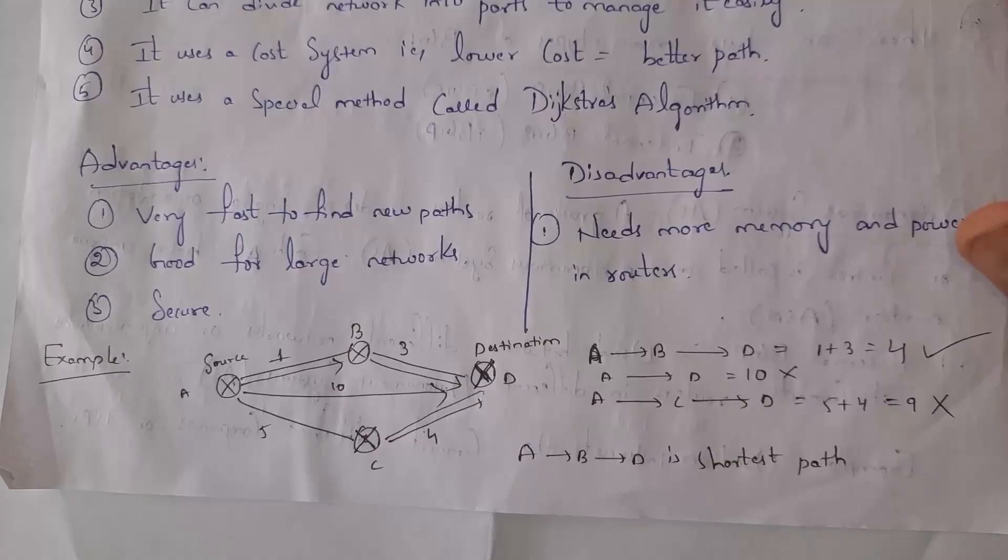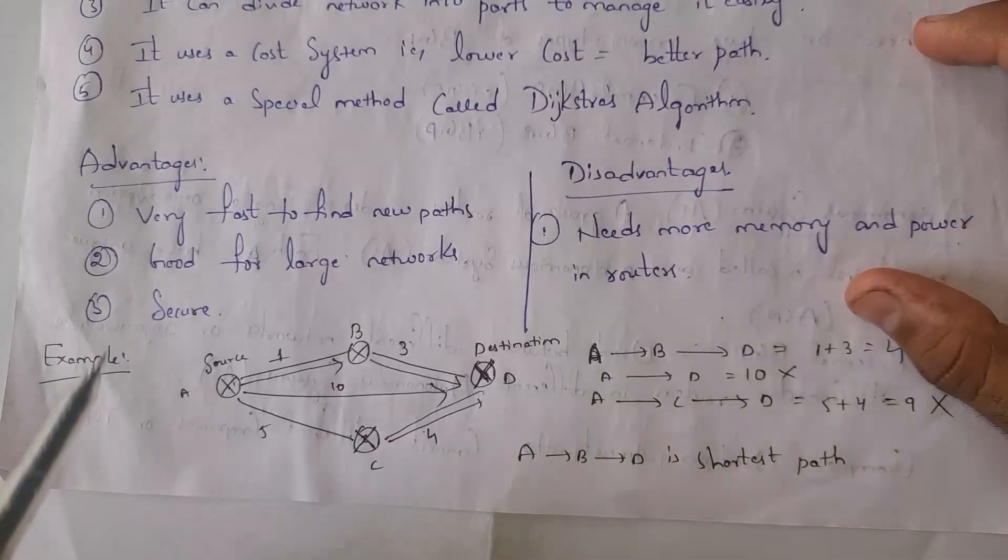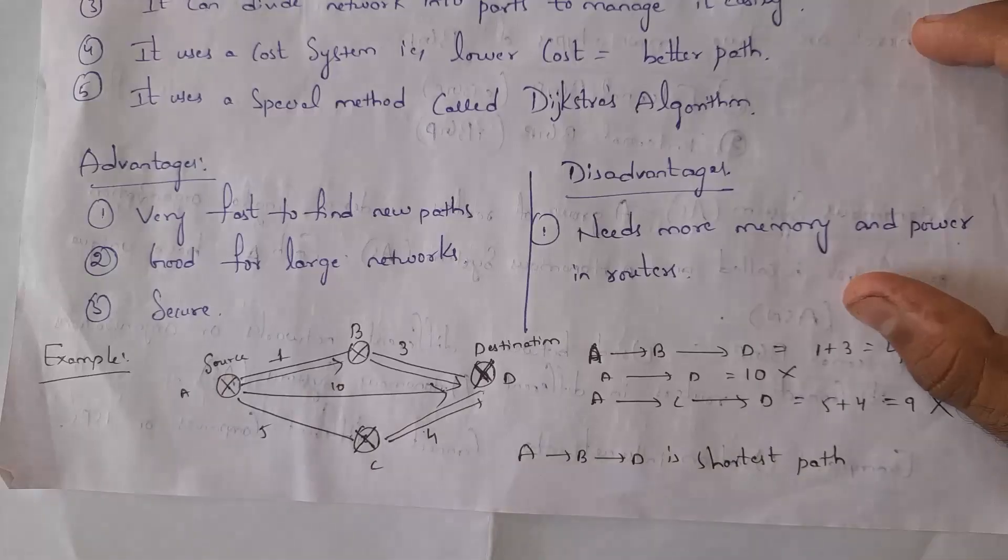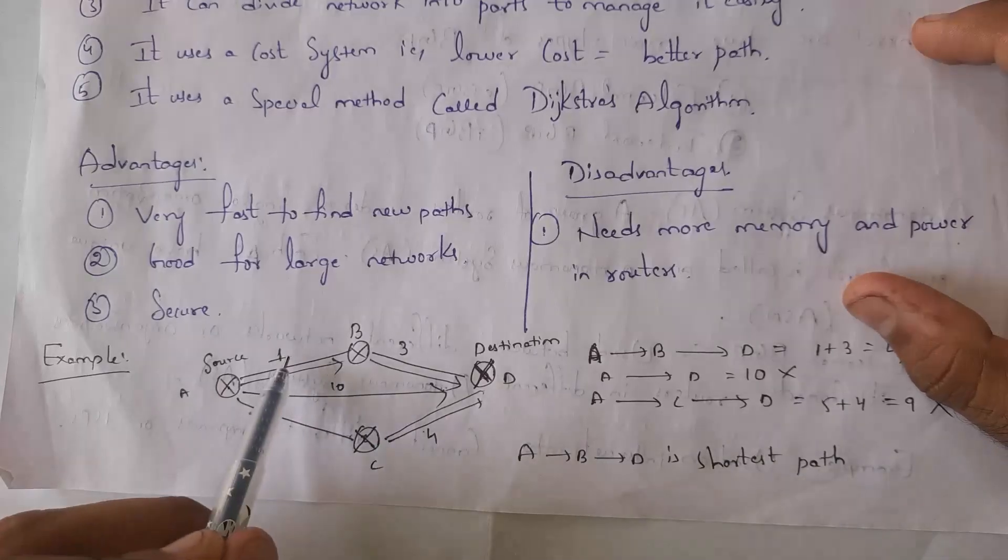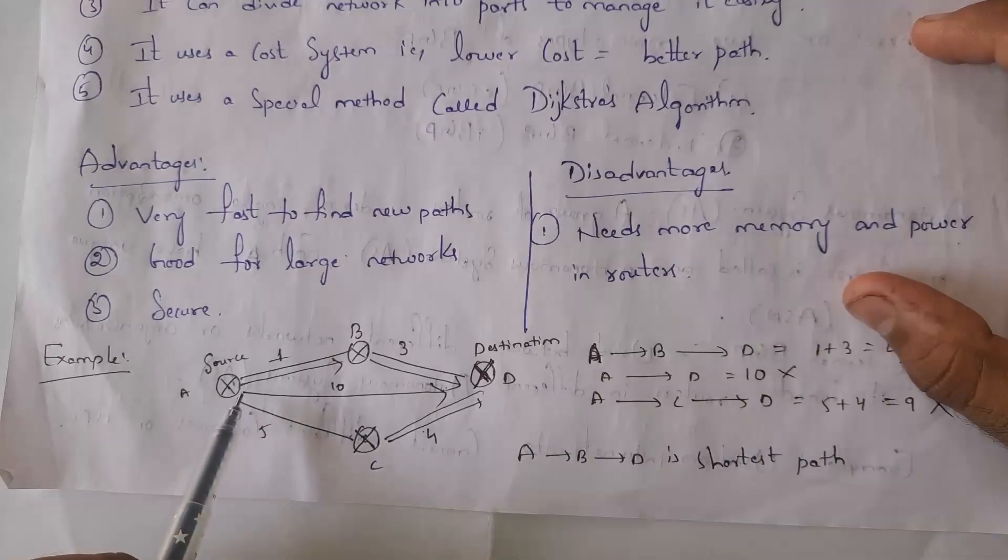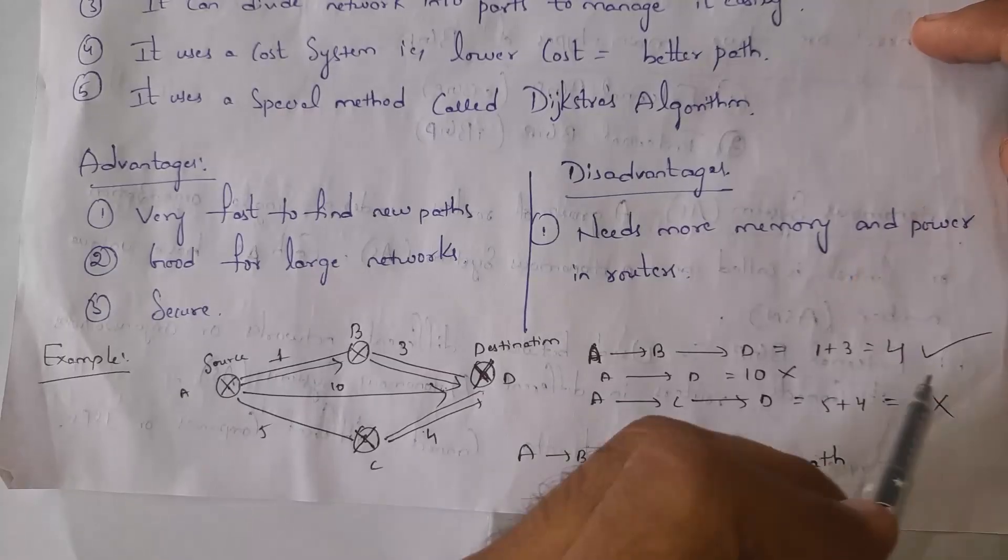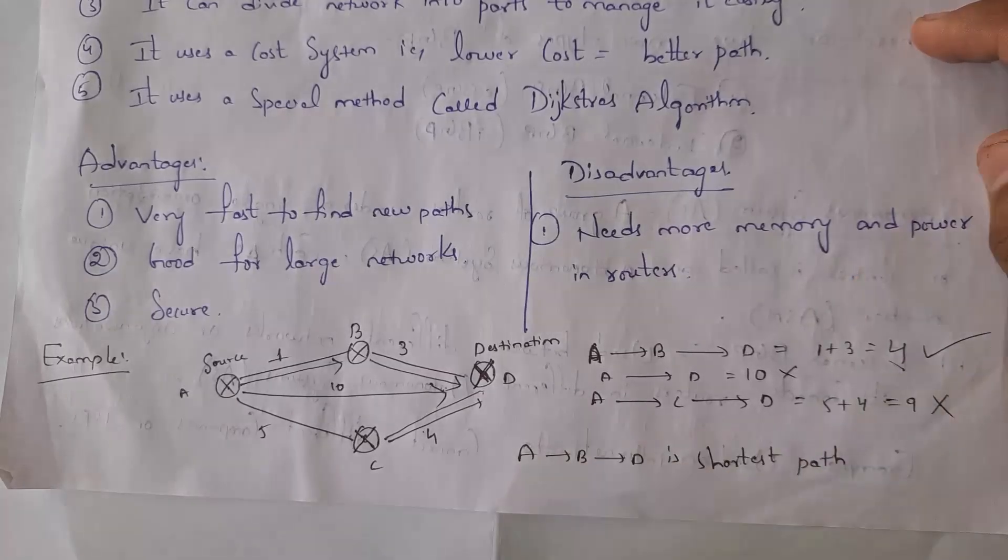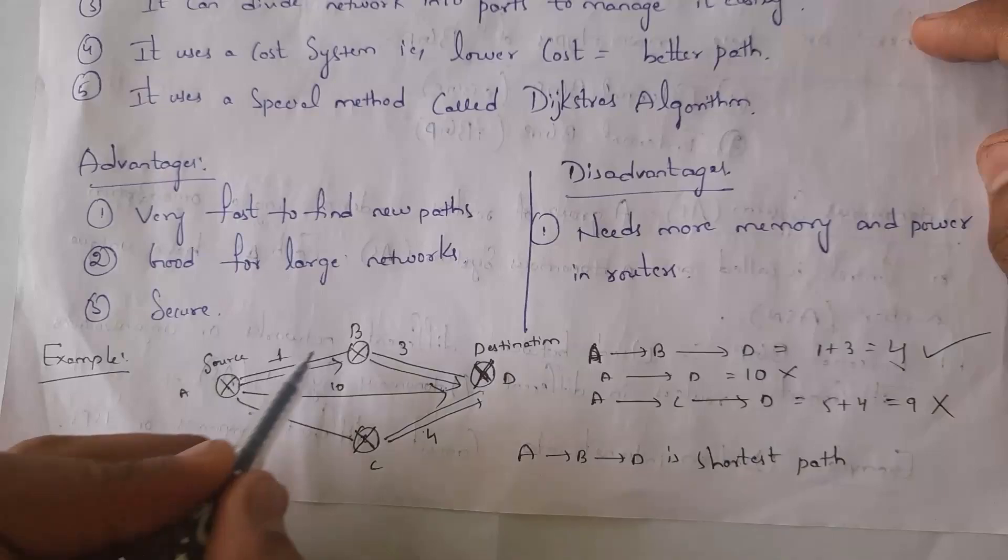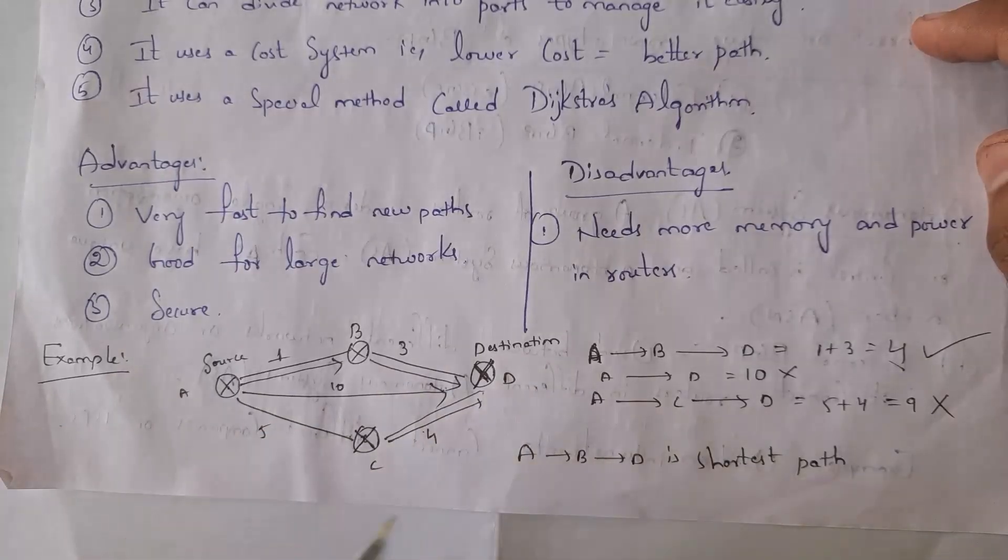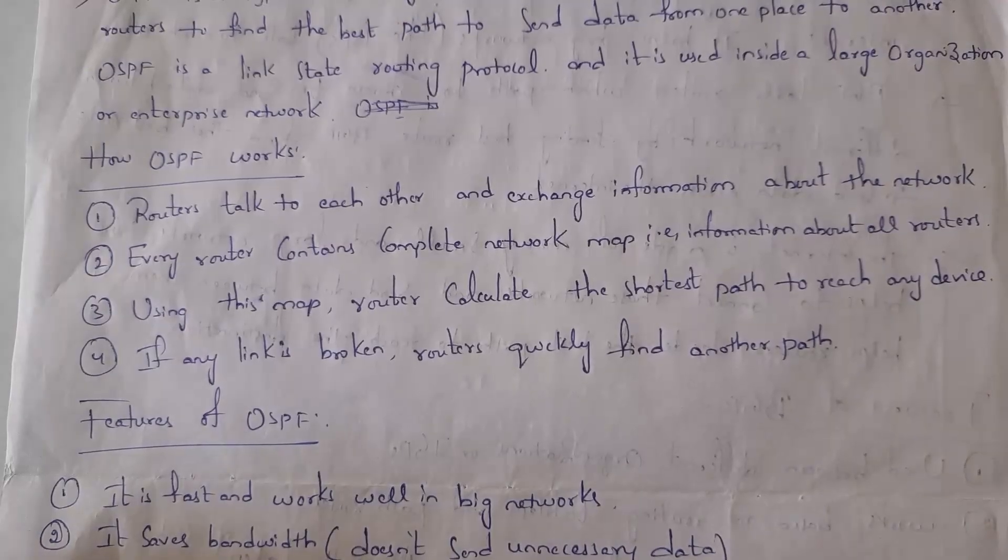This is an example of a big network. This computer wants to transfer data to this computer. In this route, the distance is one plus three, that is four. In this route, distance is ten. And in this route, distance is five plus four, that is nine. As four is the smallest route, OSPF will choose this route. So OSPF is used to find the best route, that is the shortest path, in order to transfer data from one device to another device.